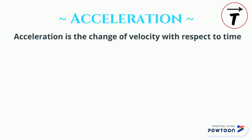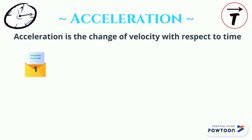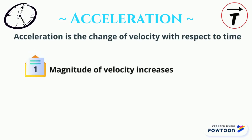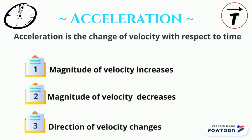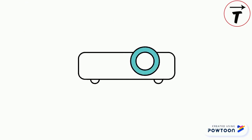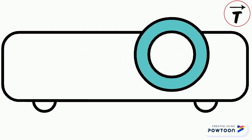Acceleration is the change of velocity with respect to time. This change can appear in three ways: the magnitude of the velocity could increase or decrease, and the direction of velocity might change. What are the factors affecting the magnitude and the direction of the acceleration?